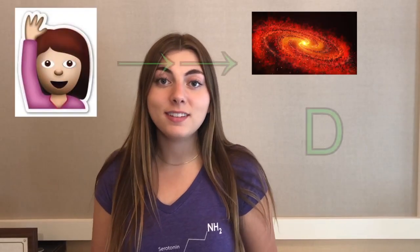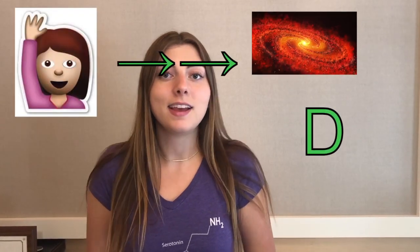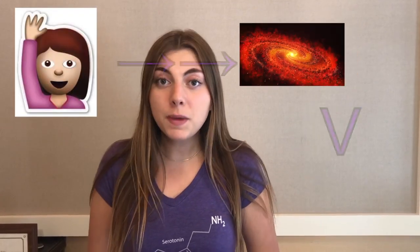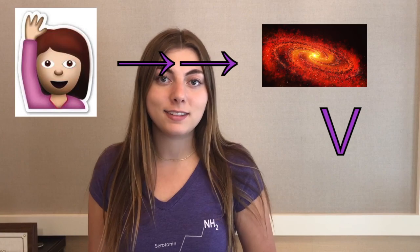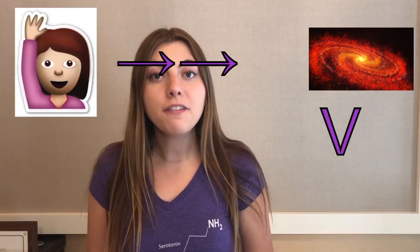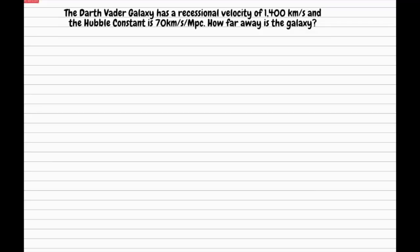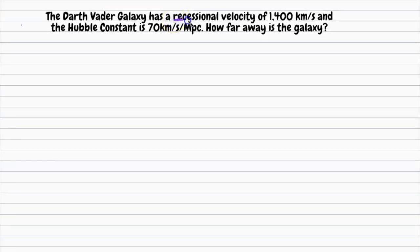We can use Hubble's Law to determine our distance from a galaxy and the speed at which that galaxy is moving away from us. Say the Darth Vader galaxy has a recessional velocity of 1400 km per second and the Hubble constant value is 70 km per second per megaparsec.